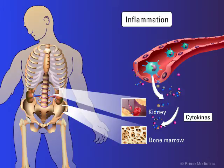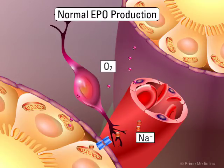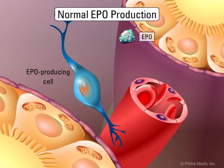Cytokines have profound effects on the kidneys. In the kidney, the erythropoietin-producing cell is sited between the peritubular capillaries and the renal tubules. Oxygen is delivered from the capillaries to the renal tubular cells. The reabsorption of sodium by the tubular cells accounts for 90% of the oxygen consumption by the kidney. The balance of the oxygen delivery and the consumption will determine the tissue oxygen tension. At a critical tissue oxygen tension, transcription of the erythropoietin gene is stimulated.